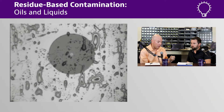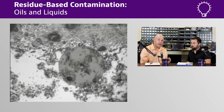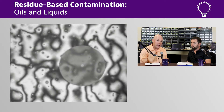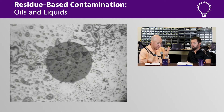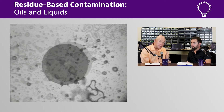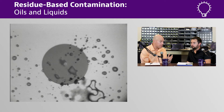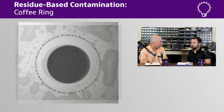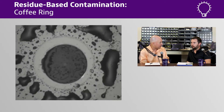With residue-based contamination, if you mate the connectors with any kind of oils or liquids in there, it changes the index of refraction between the two fibers. Think of it as light coming through — you've changed the medium, so you're going to have signal issues. Typically from an inspection standpoint, it will look like coffee ring stains.